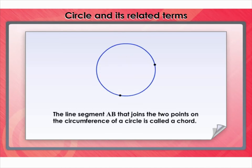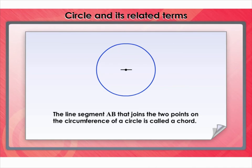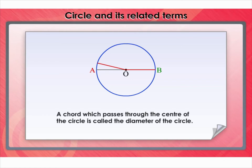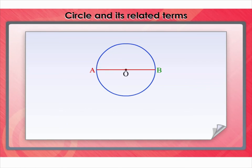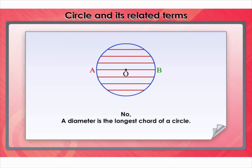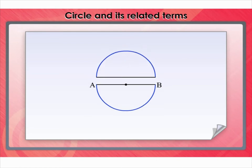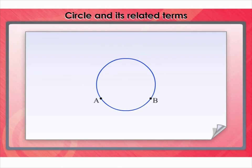If you take two points A and B on a circle, then the line segment AB is called a chord of the circle. A chord which passes through the center of the circle is called the diameter of the circle. As in the case of radius, the word diameter is also used in two senses — as a line segment and also as its length. The diameter of the circle is equal to twice the length of the radius. A diameter is the longest chord of a circle. The diameter is a special chord — it divides a circle into two equal parts, each called a semi-circle. A piece of a circle between two points is called an arc.